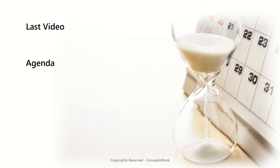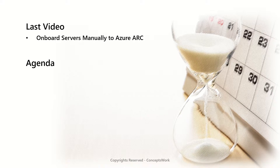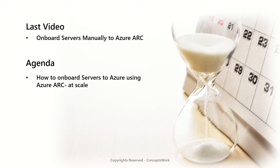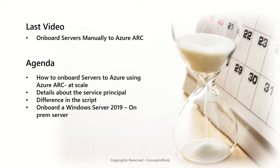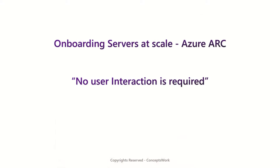If you're watching the series from the beginning, in the last video we discussed the onboarding process manually. If you haven't seen that video, I recommend watching it first because there are many aspects already covered there that I'll use as a reference point here. The core agenda of this video will be: how to onboard servers using Azure Arc at scale, details related to service principals and why they are important, the difference in the script between manual and at-scale deployment, and lastly how to onboard a Windows Server 2019 on-premises machine using Azure Arc at scale.